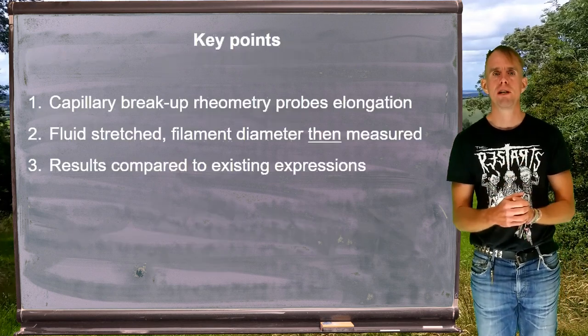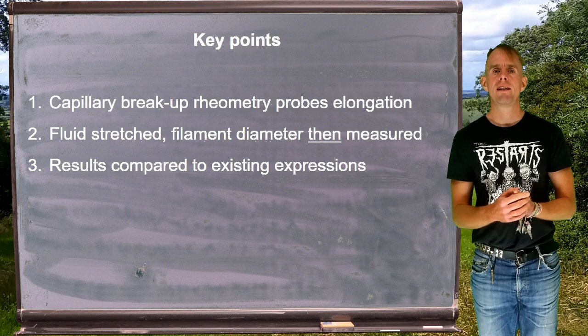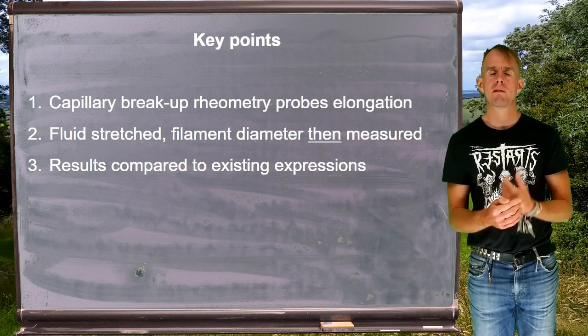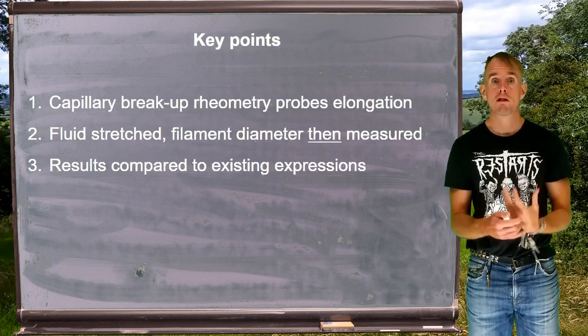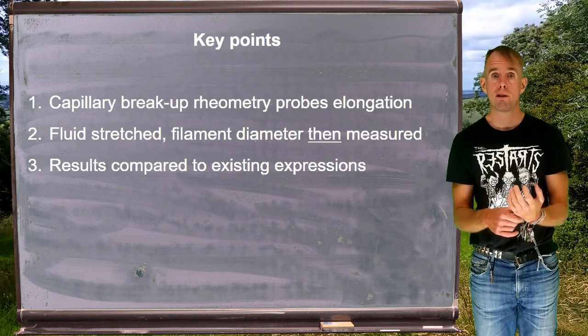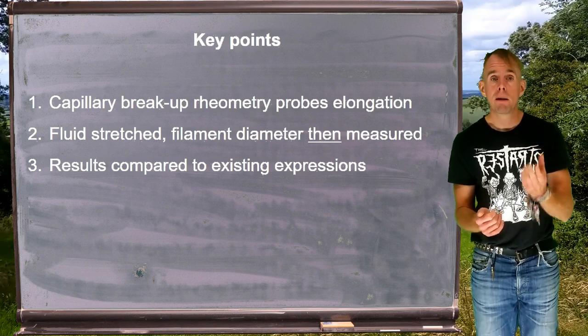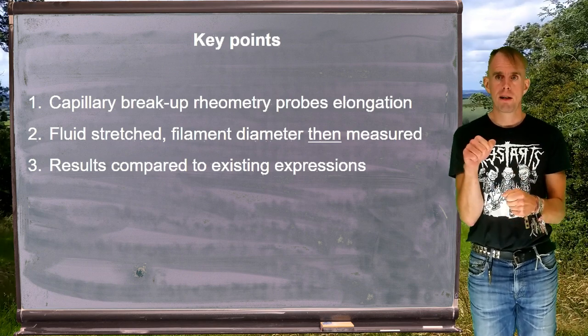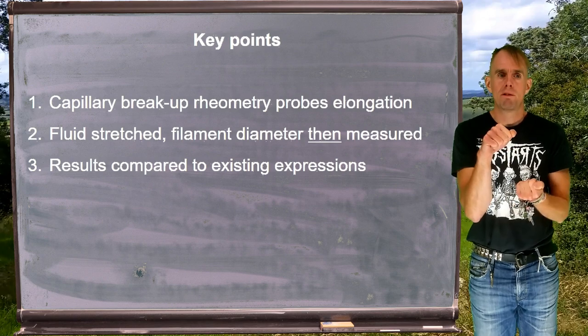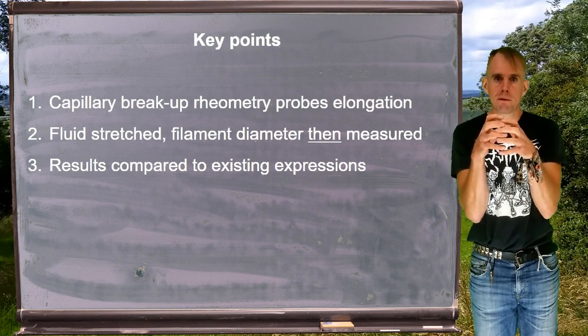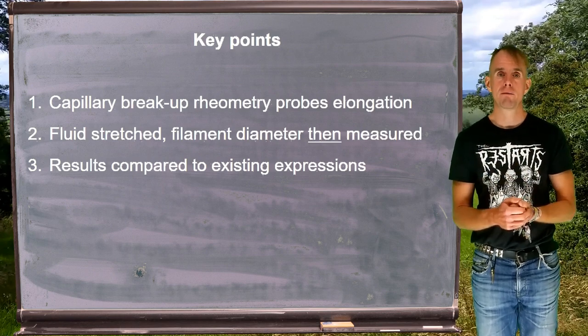So let's summarize a few key points. Capillary breakup rheometry is one of the techniques that we can use to look at the elongational behavior of complex fluids. And the motivation, don't forget, is that complex fluids, fluids typically with some sort of structure, will have that structure changed quite radically by an elongational flow in a way that we can't necessarily predict from looking at shear behavior alone. Capillary breakup rheometry stretches a fluid filament and then examines what happens to that fluid filament once it has been formed. You will find the diameter of that fluid filament decays as a function of time and that rate of decay we can compare to an existing rheological relationship.